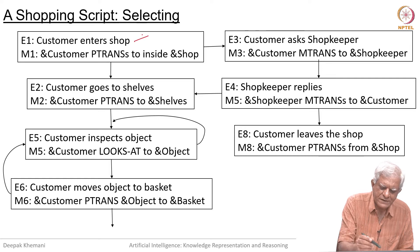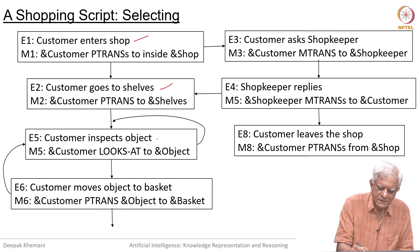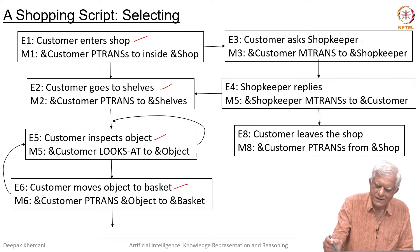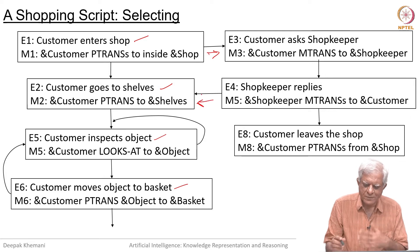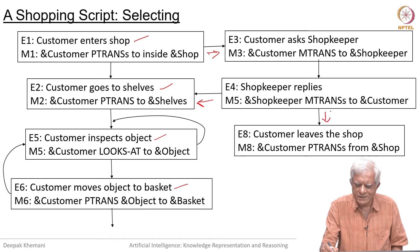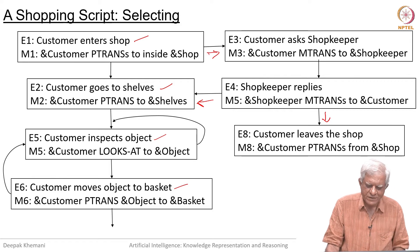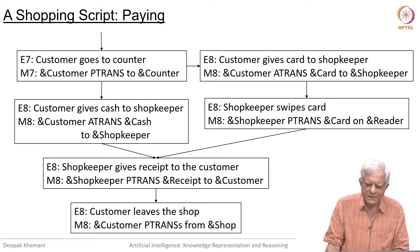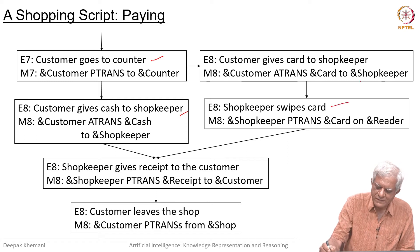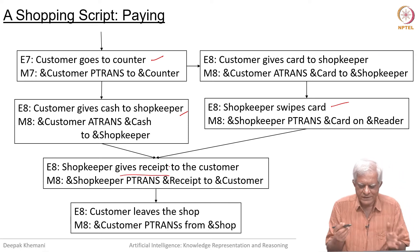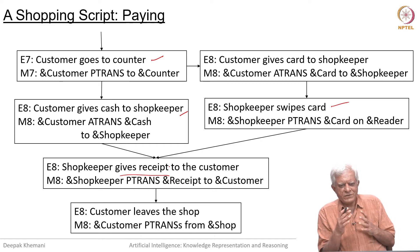To do a quick recap: a customer enters the shop, goes to shelves, inspects objects, and moves an object to the basket. Alternatively, the customer can ask the shopkeeper whether they have a certain object; the shopkeeper replies, may give directions. If the item is not there, the customer may exit. All of these are expressed in conceptual dependency. Then there is a payment scene where the customer goes to the counter, gives cash or a card, the shopkeeper gives a receipt, and the customer leaves. So this kind of situational knowledge we could capture in scripts.